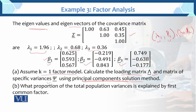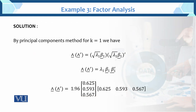Using this method we need to solve it. Previously we used eigenvalues and eigenvectors differently. Now the second part: what proportion of the total variation is explained by the first common factor? By the principal component method for k equals 1, we have Lambda and Lambda prime.